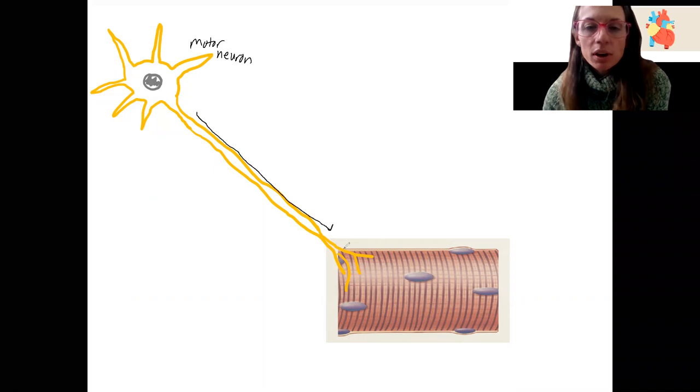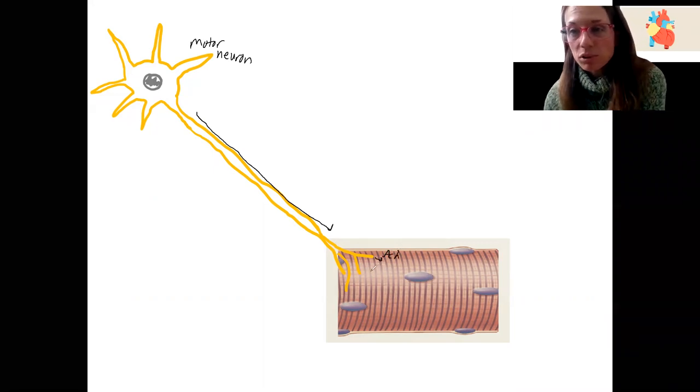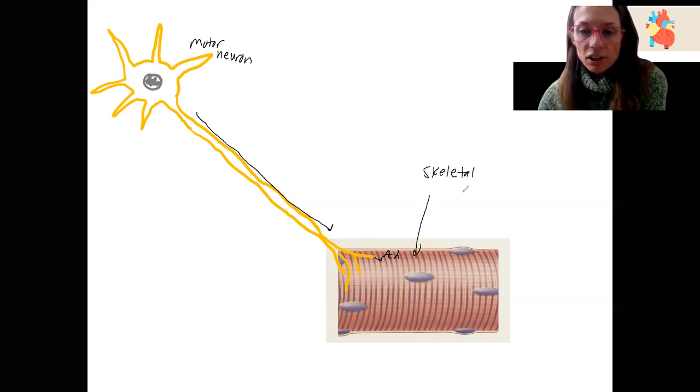And is going to release neurotransmitter, ACH, acetylcholine, onto the muscle cells or muscle fibers. Acetylcholine is going to bind to acetylcholine receptors and initiate an action potential in the muscle itself. So the skeletal muscle is going to also have an action potential.